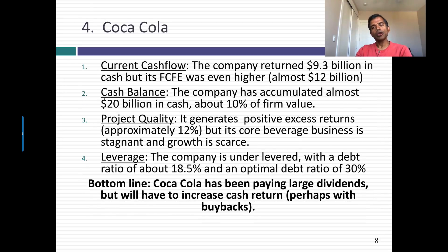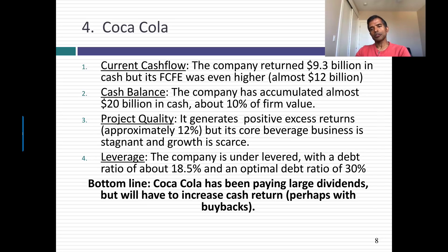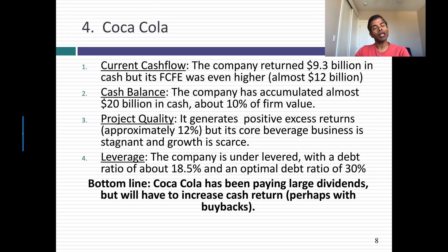Let's move to Coca-Cola. Coca-Cola returned about $9.3 billion in cash in the most recent year. Its free cash flow to equity is about $12 billion — it returned less than it had available. It's built up a cash balance of about $20 billion, which is about 10% of overall firm value. The company earns a huge positive excess return of about 12%, primarily because of its brand name in the beverage business. But that business is starting to stagnate — Coca-Cola will continue to earn excess returns on existing investments, but there aren't that many new investments to make. And to top it off, Coca-Cola is under-levered. As with Apple, even though they've been returning a lot of cash, I would encourage them to return even more, because that cash really does not have much use in the company, and by returning more cash perhaps they can move back towards their optimal debt ratio.